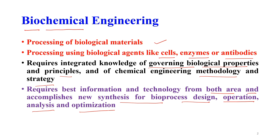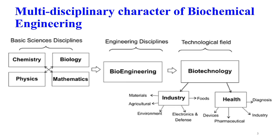Biochemical Engineering has a multidisciplinary character. It requires the basic science disciplines starting with chemistry, physics, maths and biology. It then applies engineering principles and finally goes to biotechnology for technological demonstration, where it is explored for various industrial and healthcare applications.